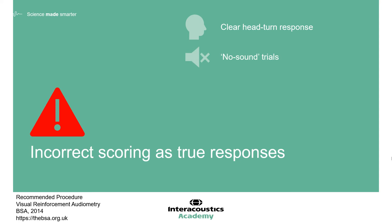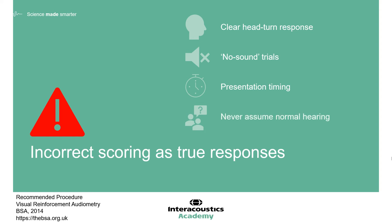Reading the child and the testing scenario allows for the optimum timing of stimulus presentation. It is also important to avoid introducing tester response bias. If the tester believes or wishes that the child's hearing is normal, then this can lead to a lack of objective interpretation. We should never assume normal hearing or be trying to prove normal hearing. Our role is to assess and record results, whatever they may be.